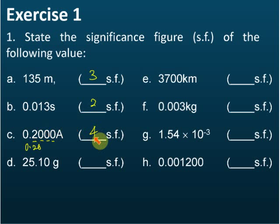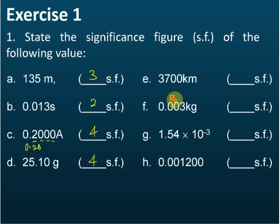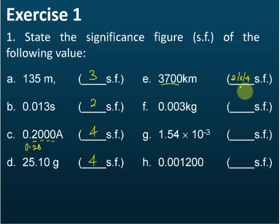So C: 4 significant figures. D — no problems, 4 significant figures. And then this one — how many significant figures? 4 or 2? Actually, we are not sure for this one. We are not sure of the number of significant figures. It can be 2, it can be 3, or it can be 4. It's not sure.